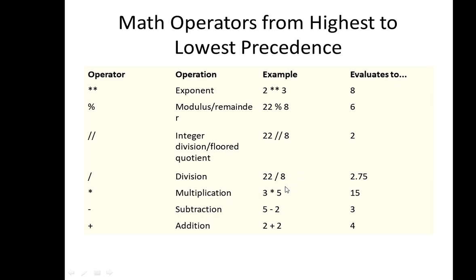If you don't want it to round off, just give a single slash. So 22 divided by 8 is actually 2.75. Asterisk is the multiplication operation, minus is subtraction, and plus is addition. Let's try these simple operations in the editor.